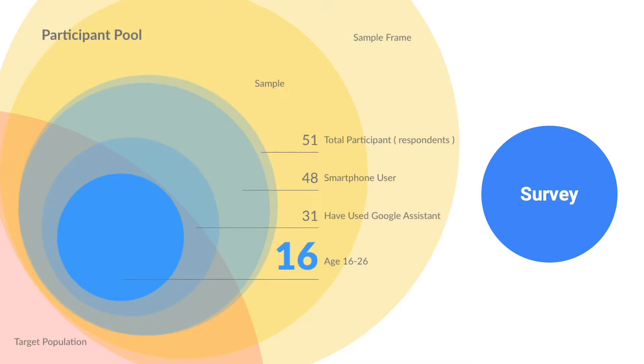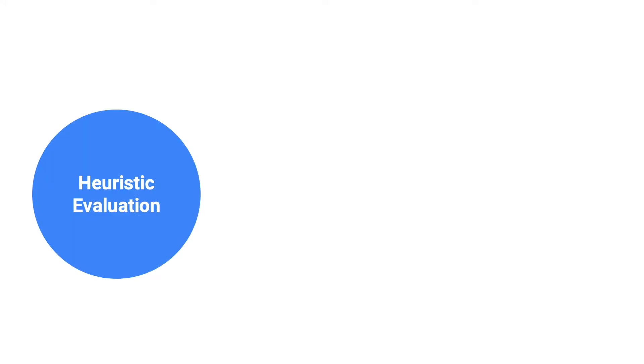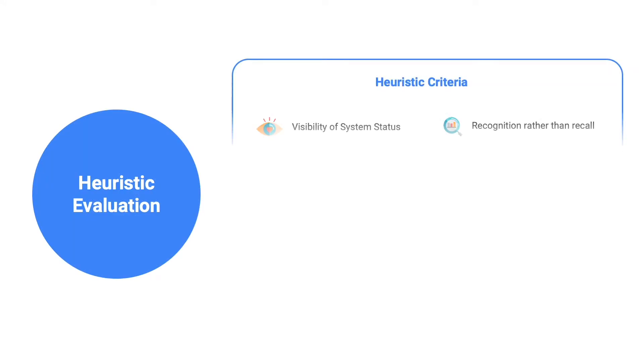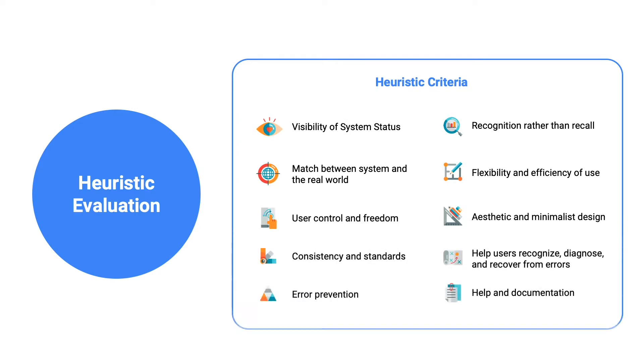Our next step was to send out a survey, which had 51 total participants and 16 in our target demographic. Then we conducted a heuristic evaluation using Nielsen's heuristic criteria. These evaluations helped us choose appropriate tasks for our next method, usability tests.